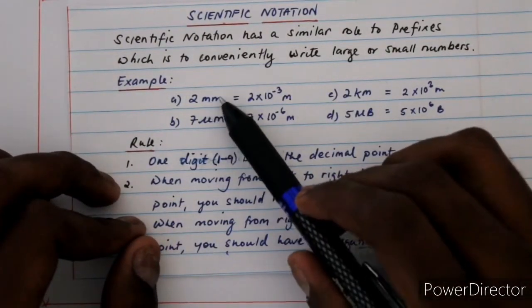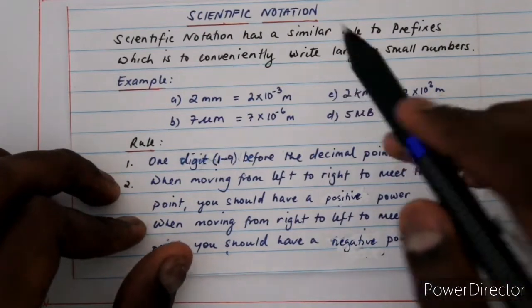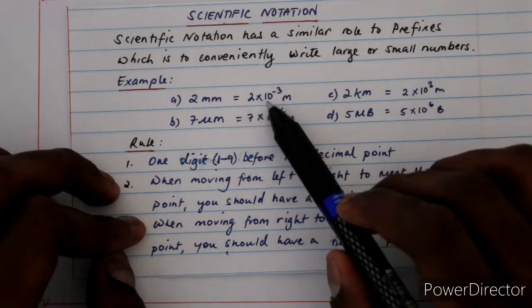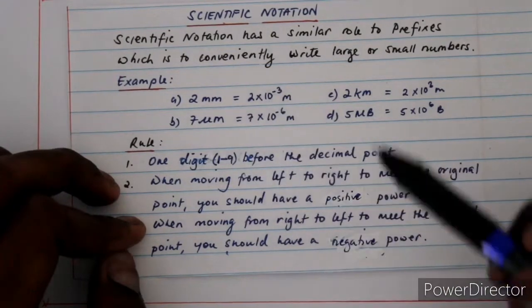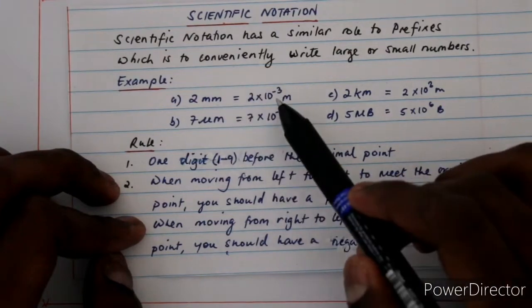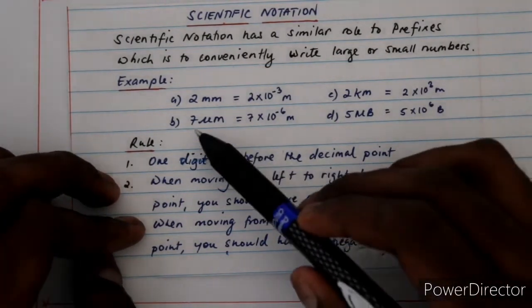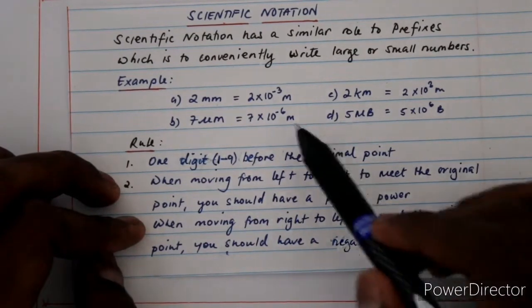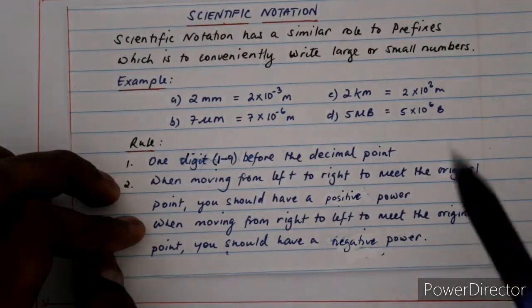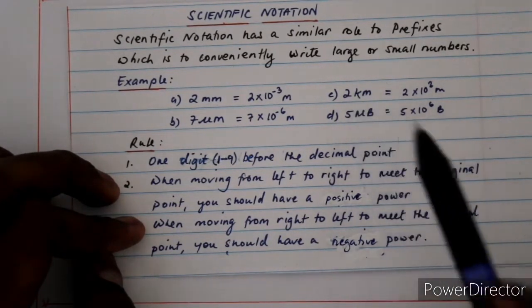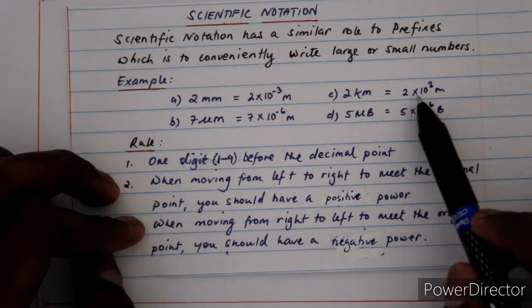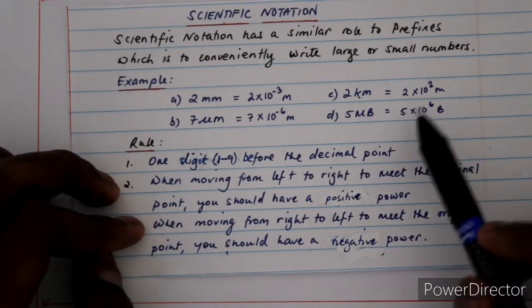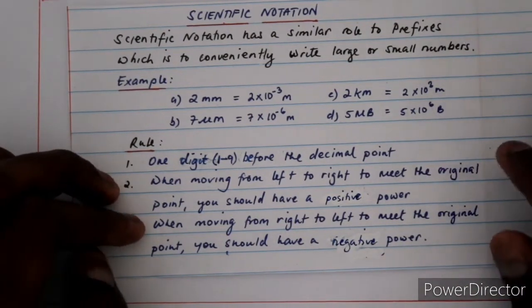For example, if we have 2 millimeters, 'milli' is the prefix and 'meter' is the unit. We know that milli is 10 to the power of negative 3, so we can write it as 2 times 10 to the power of negative 3 meters — removing the prefix and replacing it with the power of 10. Similarly, 7 micrometers becomes 7 times 10 to the power of negative 6 meters. Kilo gives 2 times 10 to the power of 3 meters, and 5 megabytes becomes 5 times 10 to the power of 6 bytes.